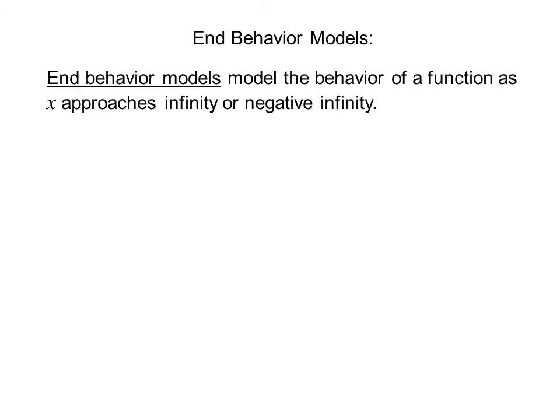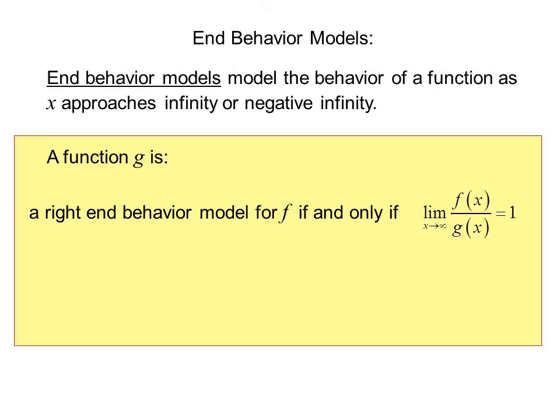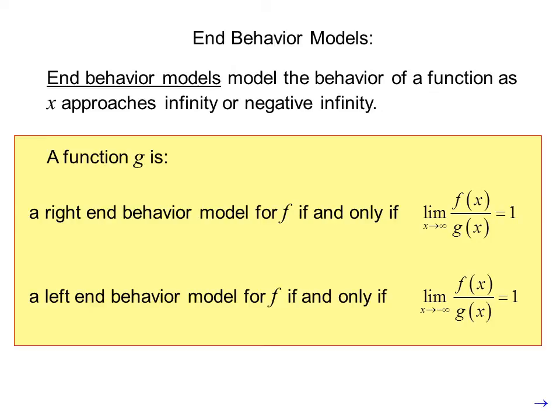End behavior models model the behavior of a function as x approaches infinity or negative infinity. The function g is a right-hand behavior model for f if and only if the limit as x goes to infinity of f of x over g of x equals 1, and a left-hand behavior model for f if and only if the limit as x approaches negative infinity of f of x over g of x equals 1.